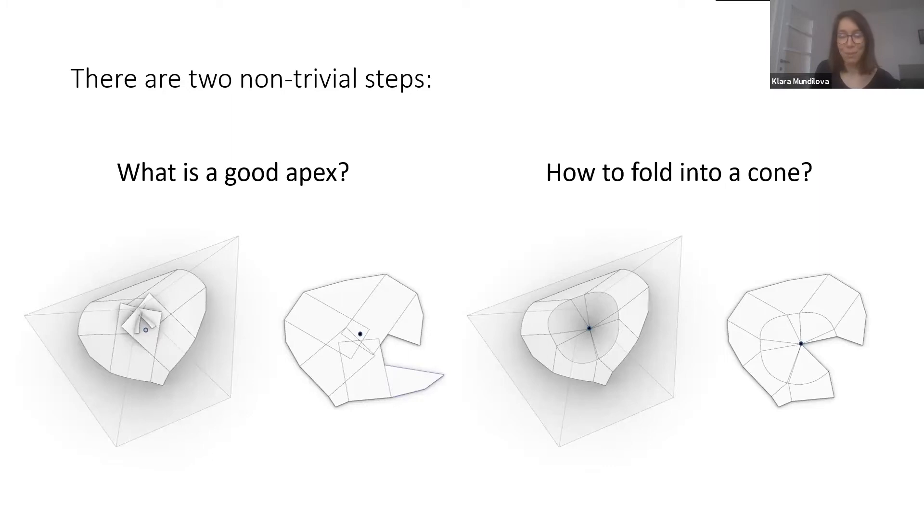There are two non-trivial steps in this approach. The first one is, what is a good apex? The second open question is, if I have a good apex, how do I find the crease curve that would fold into this apex?